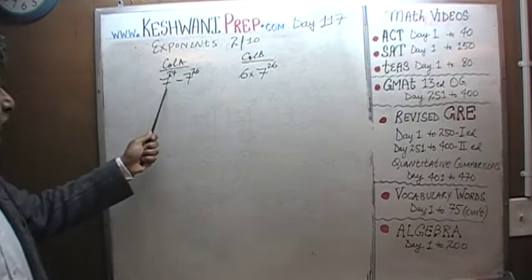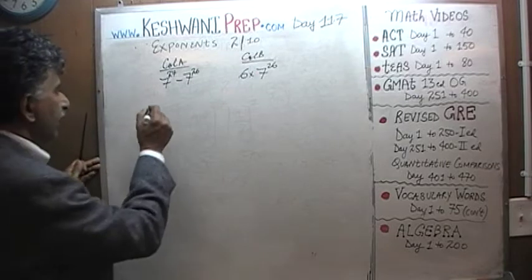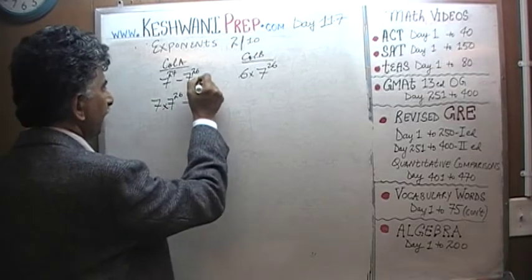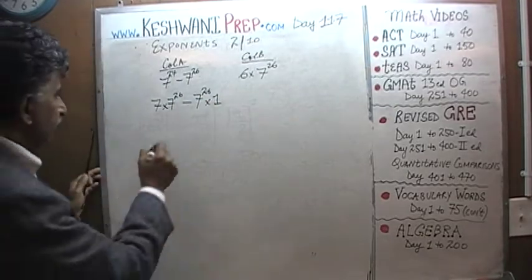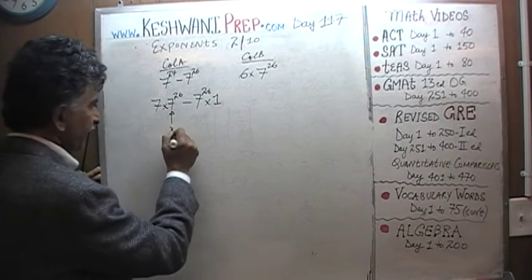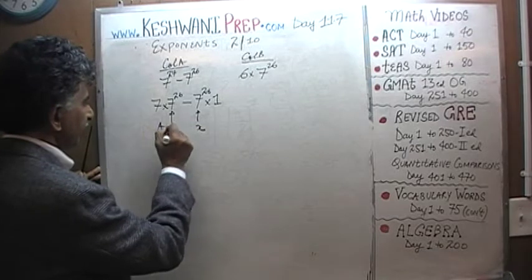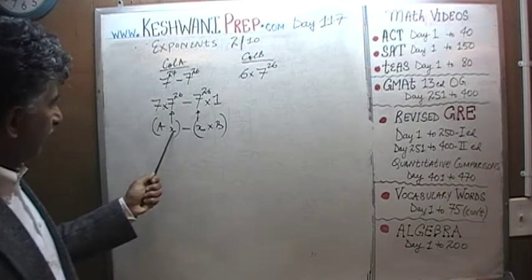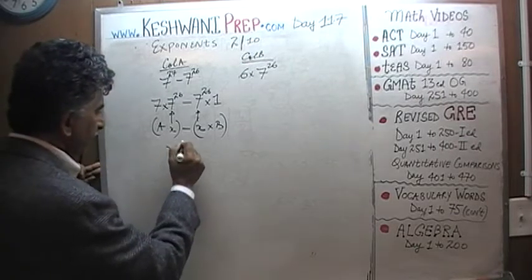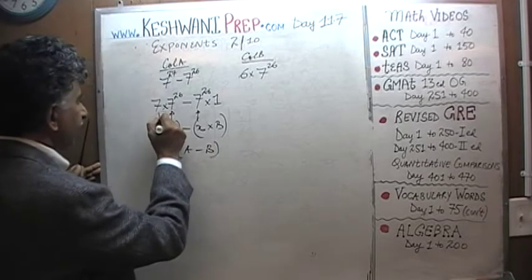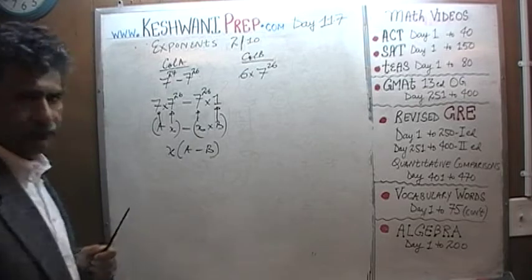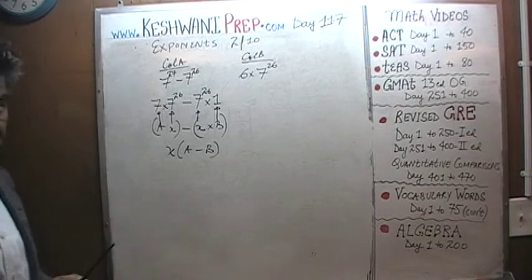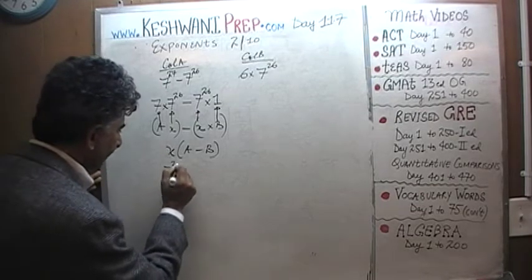What can we do here? Well, here we have 7 raised to 27. 7 raised to 27 can be written as 7 times 7 raised to 26, minus 7 raised to 26 times 1. Now think of 7 raised to 26 as some quantity — let's say X. So we have AX minus BX. As you can see, we have a common factor of X. We can take out the X and we are left with A minus B. A is the 7, B is the 1, and X of course is 7 raised to 26, that's the common factor.